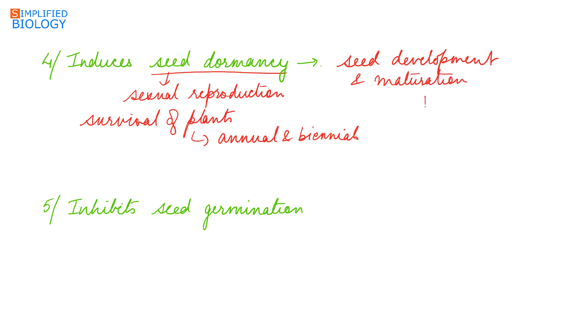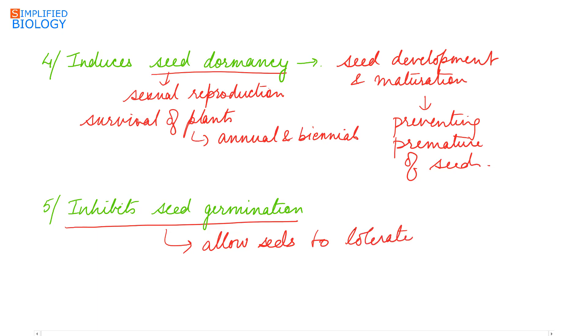As in annual and biennial the plant dies, the only part that is left behind are the seeds which can then grow into new plant. By inducing seed dormancy, it helps in seed development and maturation, thus preventing premature germination of seeds and allowing seeds to tolerate extreme conditions like desiccation and extremes of temperature.